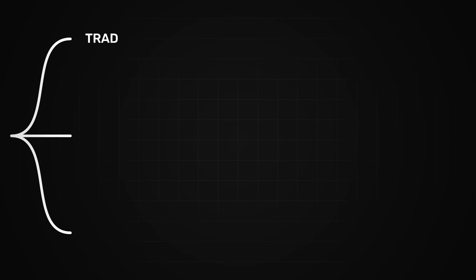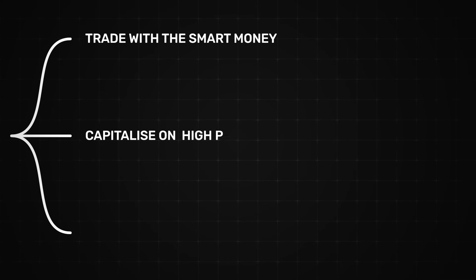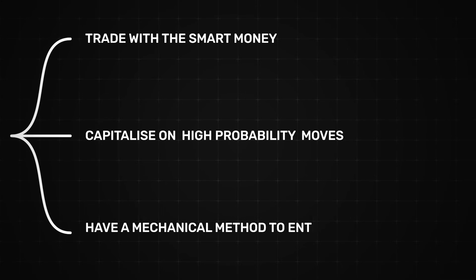If you can master flip zones you will be able to trade with the smart money, capitalize on high probability moves, and have a mechanical method to enter the same way every single time. This is absolutely crucial so that you can execute like a robot without emotional interference sabotaging your results.